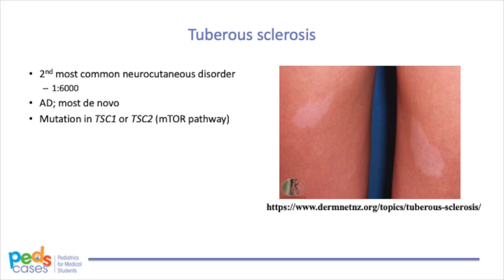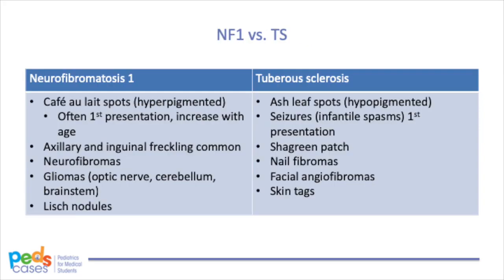Let's compare the features and presentations of NF1 and TS. The characteristic skin lesions of NF1 are hyperpigmented macules known as café au lait spots, which are often the first presentation and tend to increase in number throughout childhood. Axillary and inguinal freckling is also common in NF1. In TS, the skin lesions are ash leaf spots, which are hypopigmented and polygonal or oval-shaped, best viewed with a Wood's lamp. Other TS skin lesions include shagreen patches, ungual fibromas, and facial angiofibromas — which are pathognomonic but usually appear at a later stage.